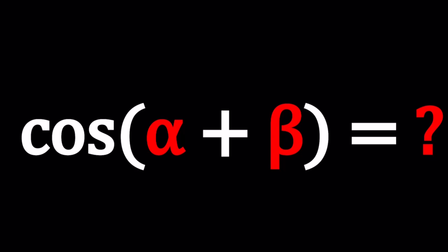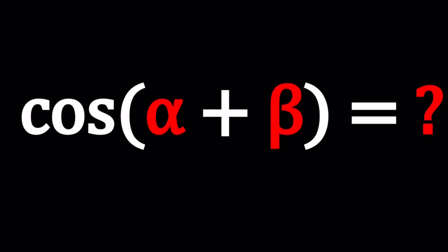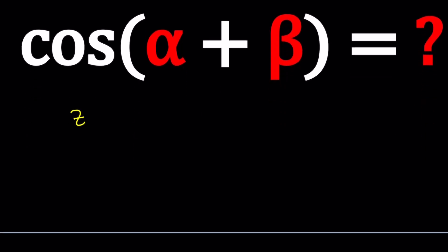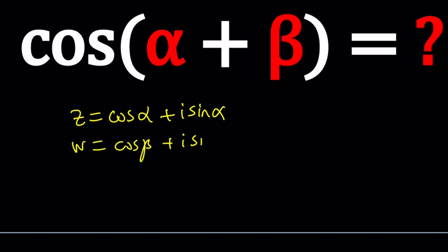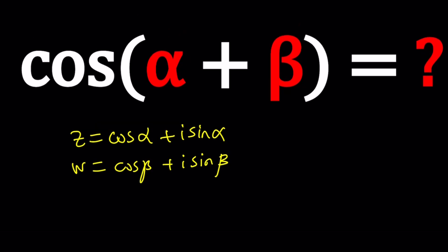So we have cosine alpha plus beta and we're going to find out what it is. Start by making up two complex numbers in polar form: Z is cosine alpha plus I sine alpha, and W is cosine beta plus I sine beta. A lot of times we have to memorize this formula, but this approach will also help you if you get stuck. So let's go ahead and multiply these two complex numbers.